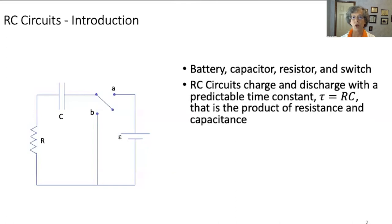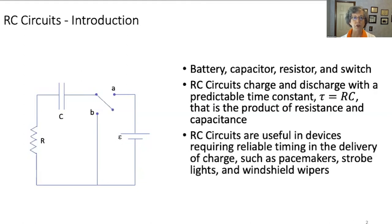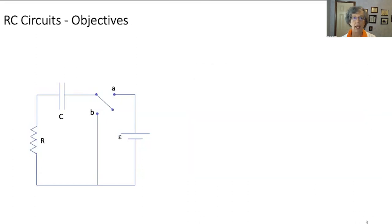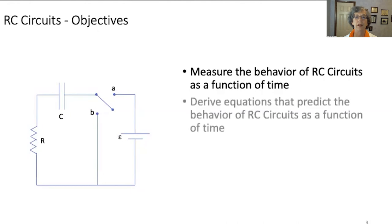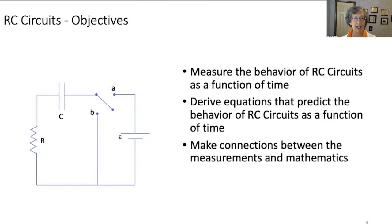RC circuits charge and discharge with predictable time constants, which we can calculate as shown. They're useful in devices requiring reliable timing, such as pacemakers, strobe lights, that sort of thing. Our objectives today are to measure the behavior of RC circuits as a function of time, derive equations that predict the behavior of RC circuits as a function of time, and finally connect what we measure to what we derive.